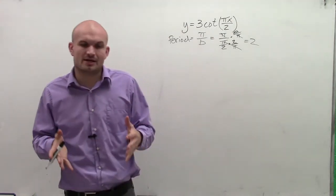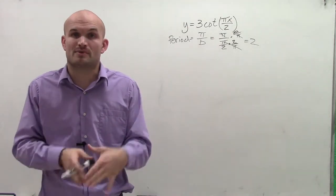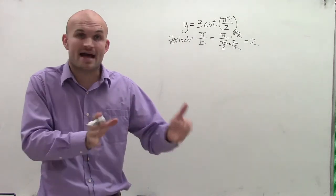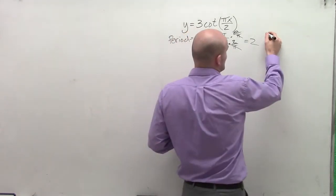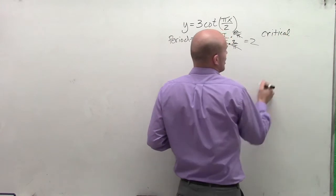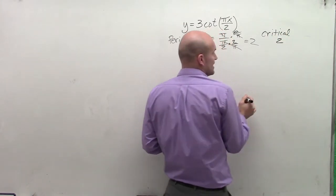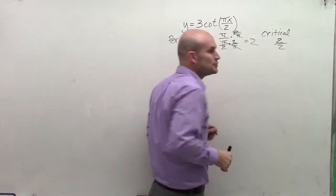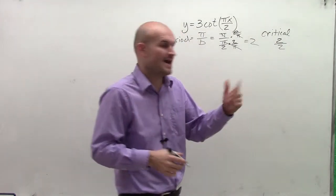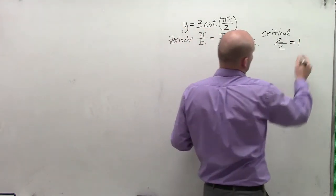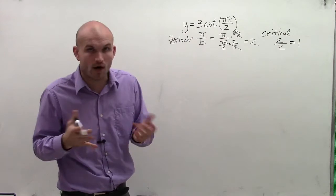Once we know the period of a cotangent graph, we have critical points, x-intercepts, and asymptotes. To find the critical points, I take my period, which is 2, and divide it by two. My critical points are going to be a distance of 1 from each other.